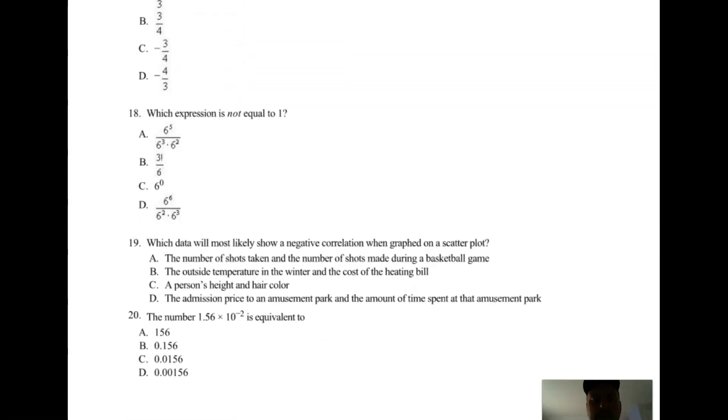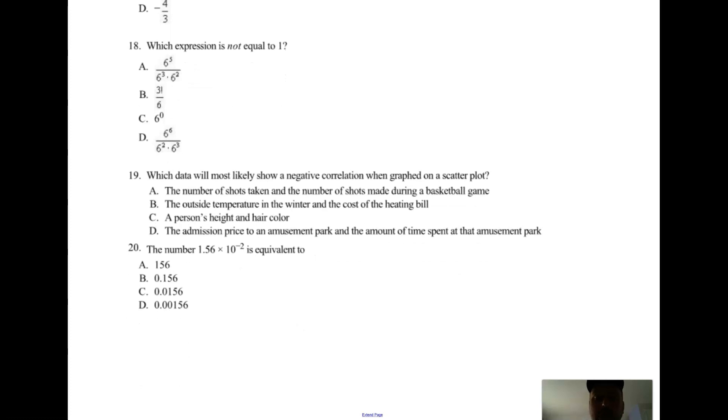Next, which expression is not equal to one? There was one symbol on here that you might have thought was a typo - it was not. That's choice B. It really is supposed to say three exclamation mark, which means three factorial. I'll explain that in a second. If you picked B because it's a symbol you didn't recognize, just go online. So choice A: 6 to the 5th over - multiplying bases the same, add your exponents. So 6 to the 5 divided by 6 to the 5 is 1. It's not that.